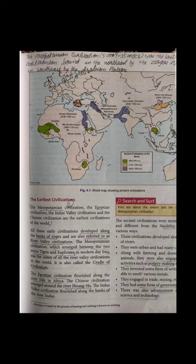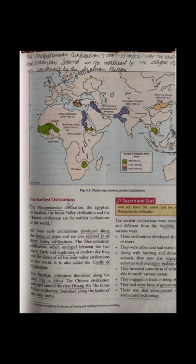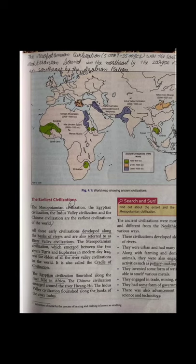We are going to understand which civilization belongs to which river. Starting with the first civilization, Mesopotamian Civilization emerged between two rivers — Tigris and Euphrates — which is in present-day Iraq. Egyptian Civilization is found near the river Nile in Africa. Chinese Civilization is near the river Huang Ho. The fourth — Indus Valley Civilization — is commonly found at the bank of the river Indus, which is the main reason it is called Indus Valley Civilization.